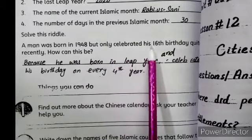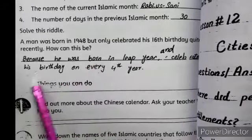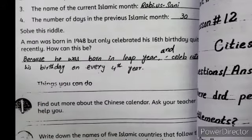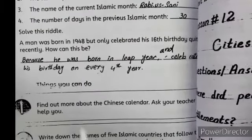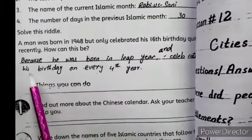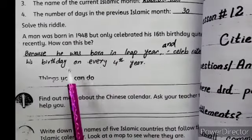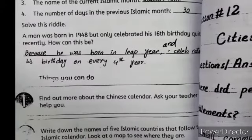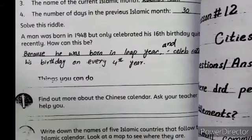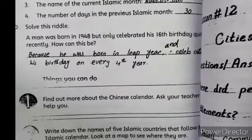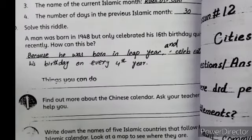Solve this riddle: A man was born in 1948 but only celebrated his 16th birthday quite recently. How can this be? Because he was born in a leap year and celebrated his birthday only every 4th year. After every 4th year, he marks his birthday.